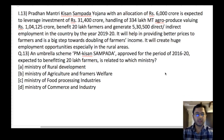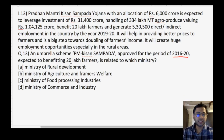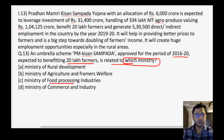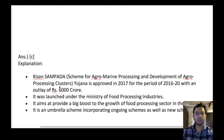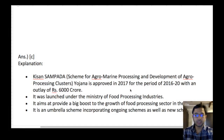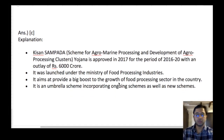Next question: PM Kisan Sampada — an umbrella scheme approved for the period 2016 to 2020, expected to benefit 20 lakh farmers — is related to which ministry? The answer is C — Ministry of Food Processing. The full form of SAMPADA is Scheme for Agro-Marine Processing and Development of Agro-Processing Clusters — remember this full form, very high chances it will be asked. The outlay is ₹6000 crore. Launched under Ministry of Food Processing Industries to provide a big boost to the growth of food processing.